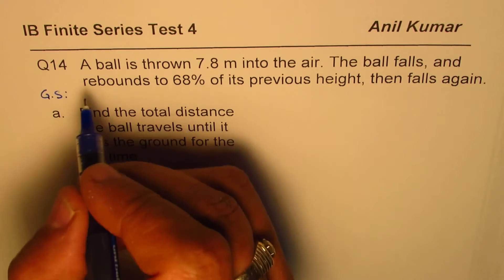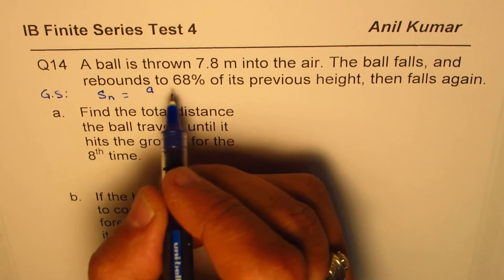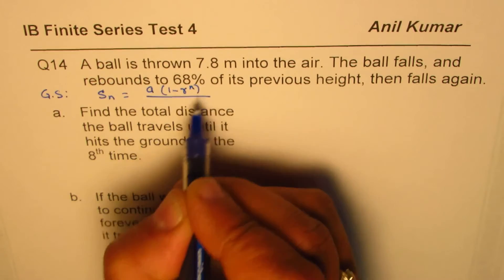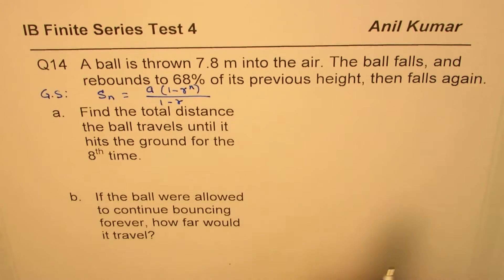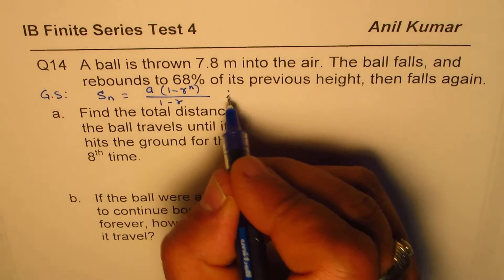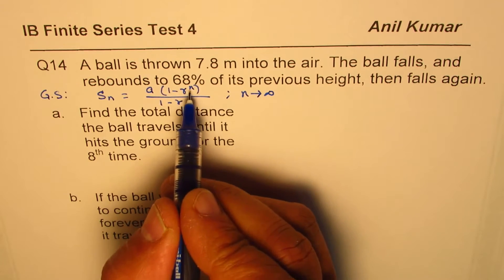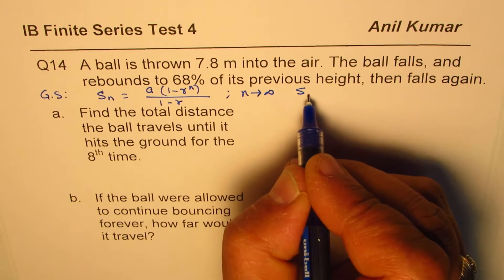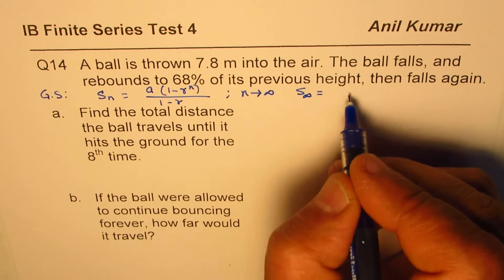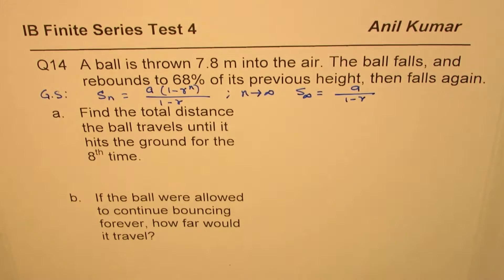The first formula for the total distance of a geometric series is: first term a, times (1 minus r to the power of n), divided by (1 minus r). The second formula is for when n approaches infinity — r to the power of n approaches 0 — so the sum for an infinite number of terms equals a over (1 minus r).